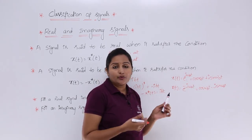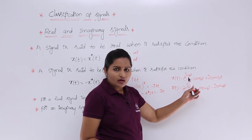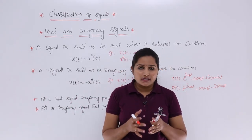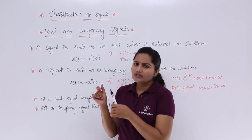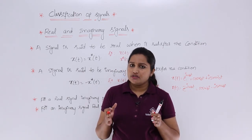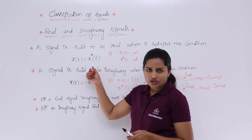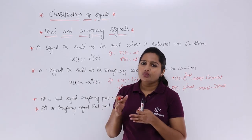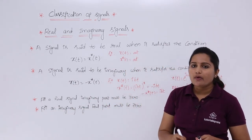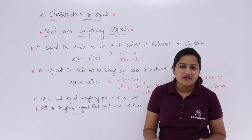Most questions come from this theory — what is meant by a real signal and what is meant by an imaginary signal. In short, a real signal is a signal which has only a real part and satisfies x(t) = x*(t). An imaginary signal has only an imaginary part and satisfies x(t) = -x*(t). These two points are very important: for a real signal the imaginary part must be 0, and for an imaginary signal the real part must be 0. This concludes the final classification of signals and systems.